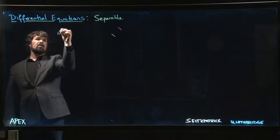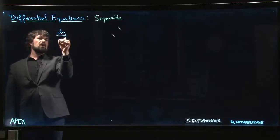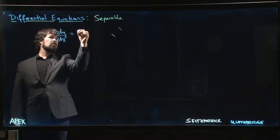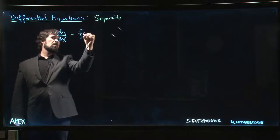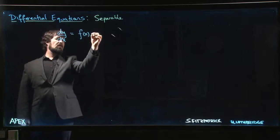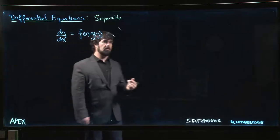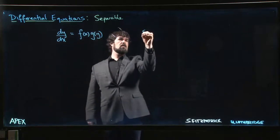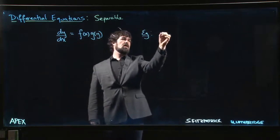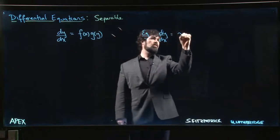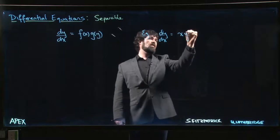A separable equation is typically one that looks like dy/dx is equal to a product: a function of x and a function of y. For example, you might have something like dy/dx equals, let's say, xy².